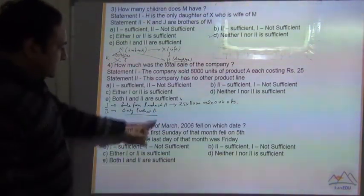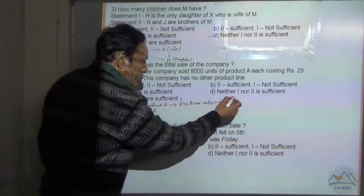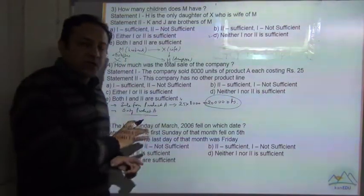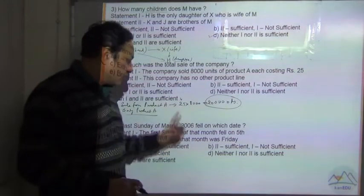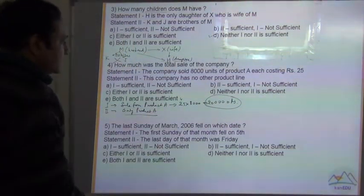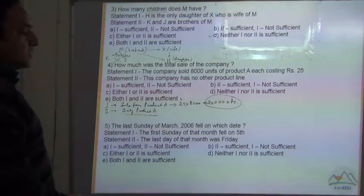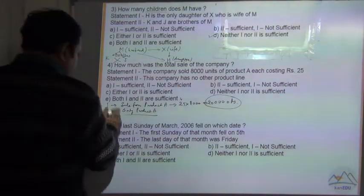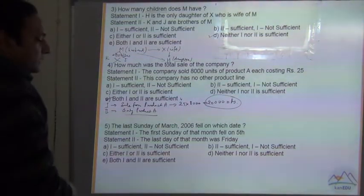It means that the total sale of the company is only this one because they do not have any product B, C, D or E, no other product. Only this product. So this is the total sale of the company. The information from statements 1 and 2 both are required to answer the question. The answer is E.